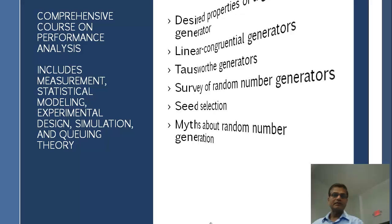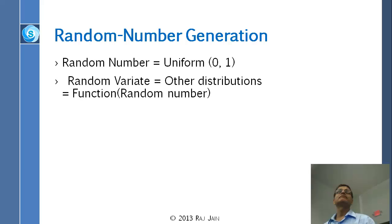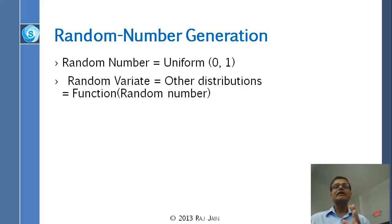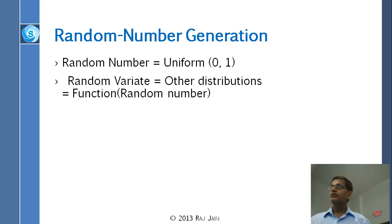Let's redefine the random number. A random number is simply a uniform number between 0 and 1. A random variate is another chapter, where we talk about how to generate normal, exponential, and so on. Here we are talking simply about uniform(0, 1). This whole chapter is about random numbers.